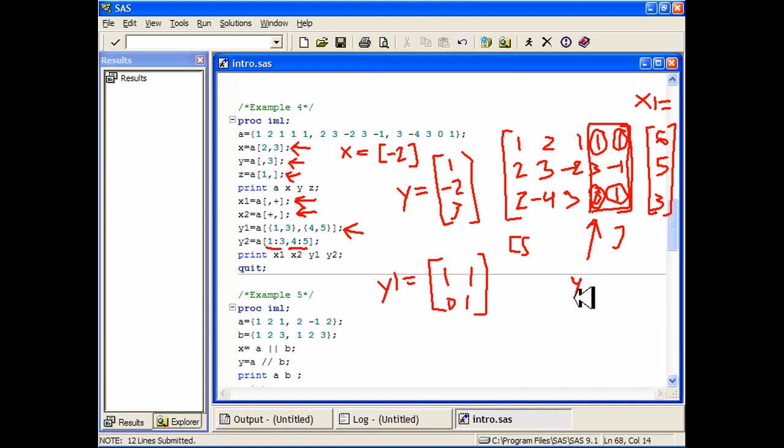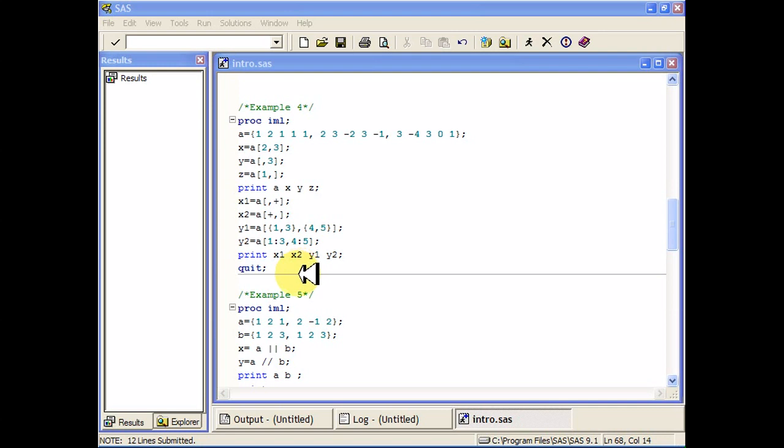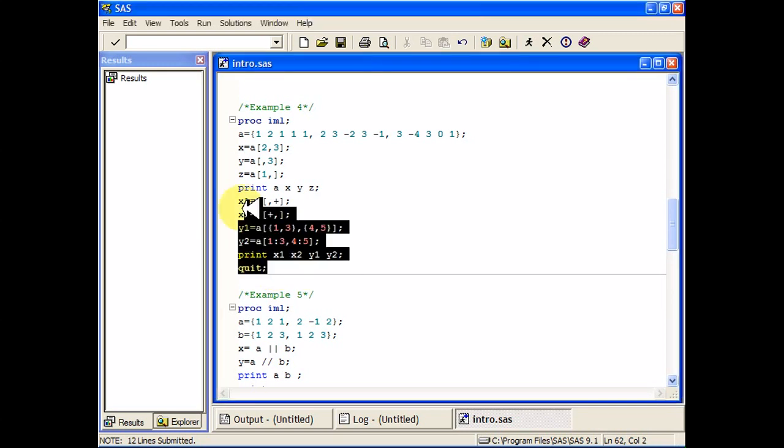And I can print them out just like this. You notice when I'm printing these out that SAS will naturally wrap around to the next row when the matrices get too big, but if you want to dictate what goes on what row, you can.